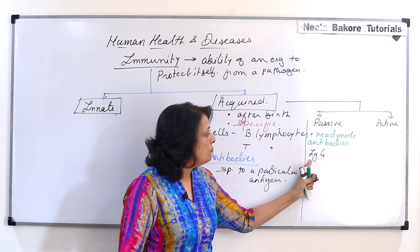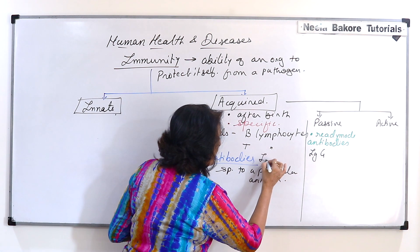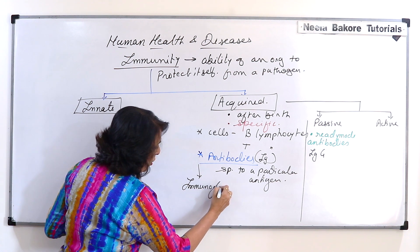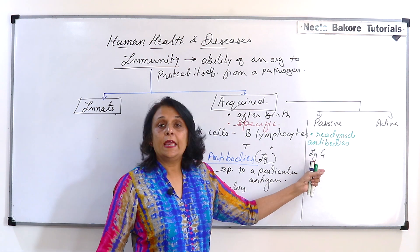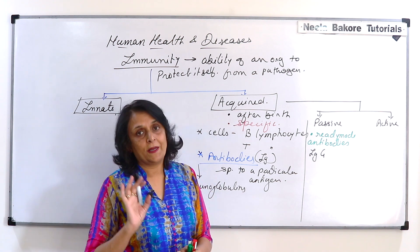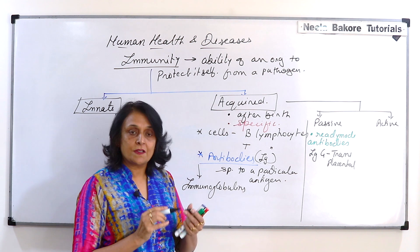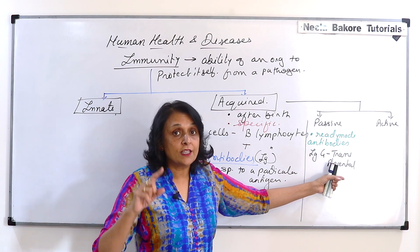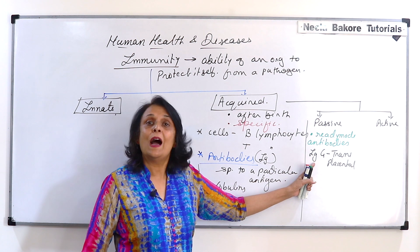Now what is Ig? It is immunoglobulin. These antibodies are globulin proteins that provide immunity, so we call them immunoglobulins. There are different types of immunoglobulins that we will also study. Immunoglobulin G — IgG — reaches into the body of the developing fetus through the placenta; this is called transplacental transfer. The mother's body produces this antibody and the ready-made antibody is transferred to the fetus. So when a baby is born, it has IgG, but its body did not actively produce it — this is passive immunity.